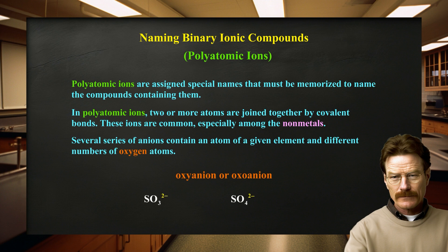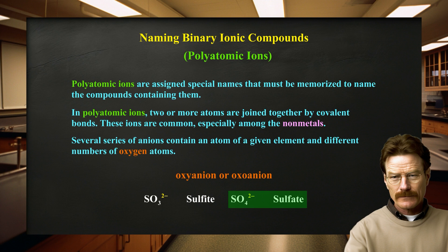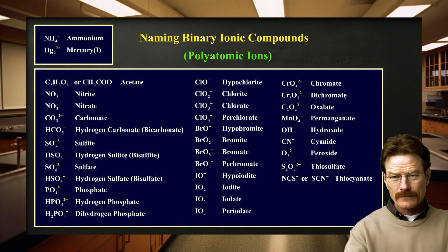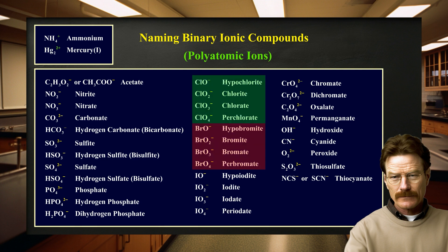Several series of anions contain an atom of a given element and different numbers of oxygen atoms. These anions are called oxyanions or oxoanions. When there are two members in such a series, the name of the one with the smaller number of oxygen atoms ends in -ite, and the one with the larger number ends in -ate. For example, SO3 2− is named sulfite and SO4 2− is named sulfate. When more than two oxyanions make up a series, hypo- and per- are used as prefixes for the fewest and most oxygen atoms, respectively. The nonmetals chlorine, bromine, and iodine form a set of four oxyanions.